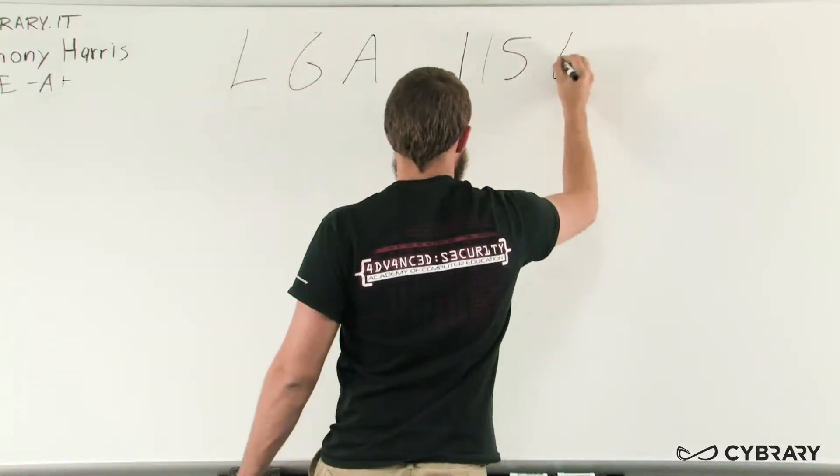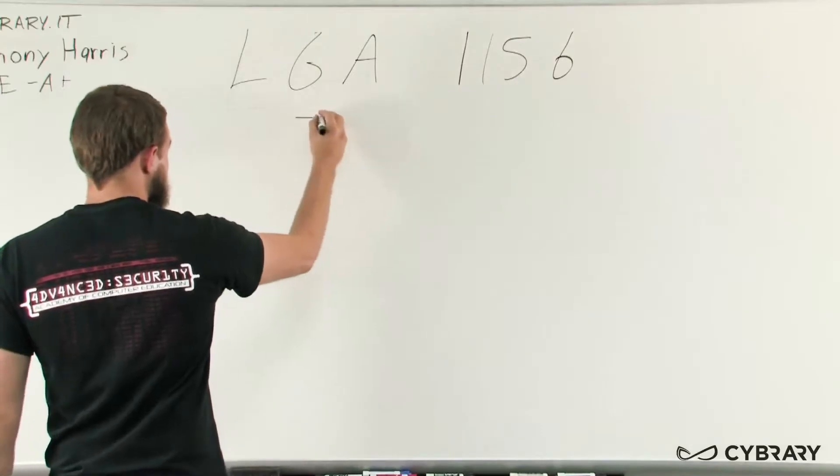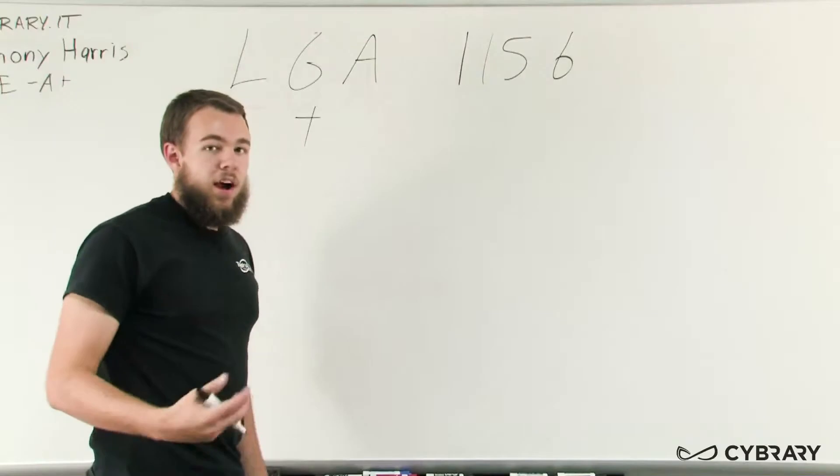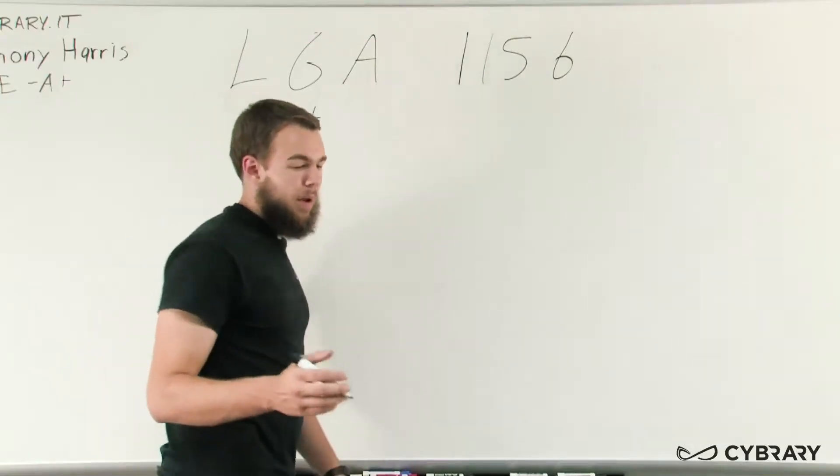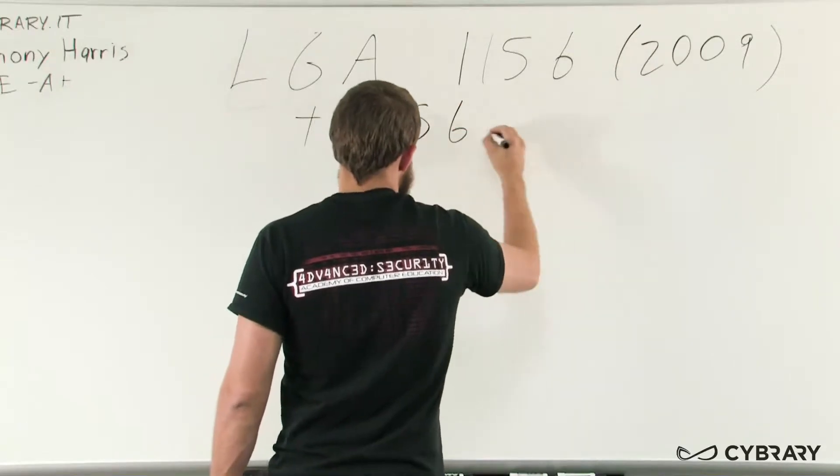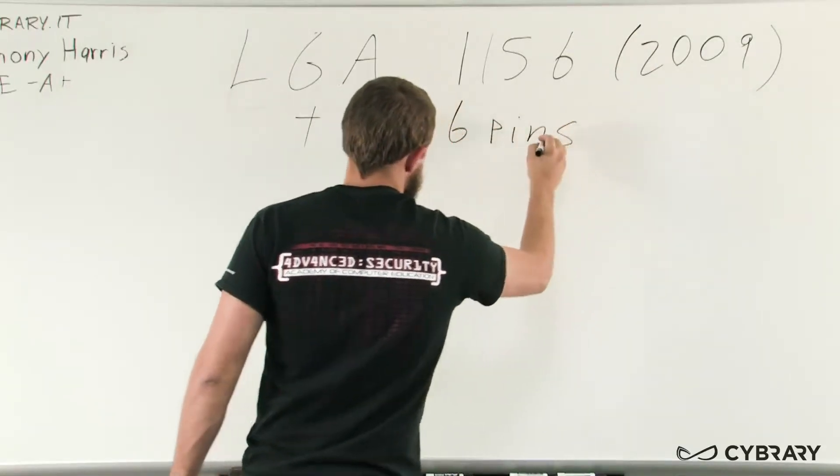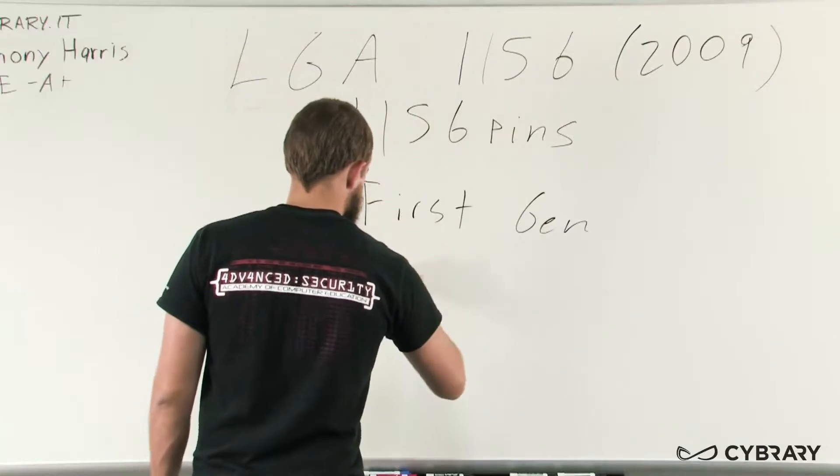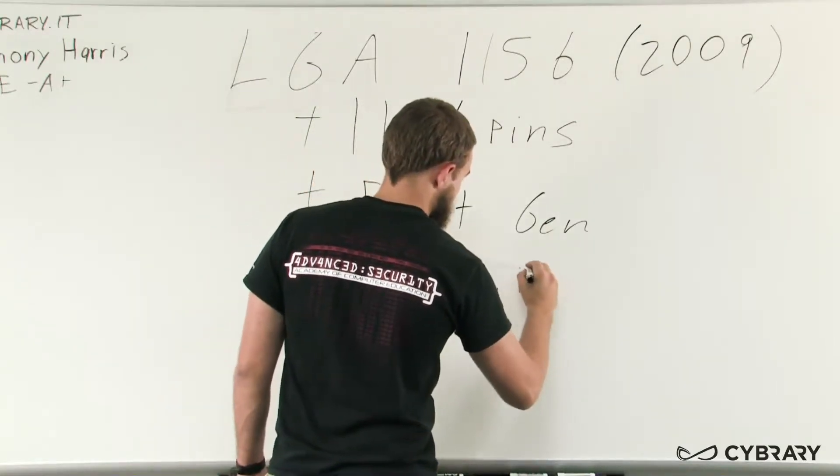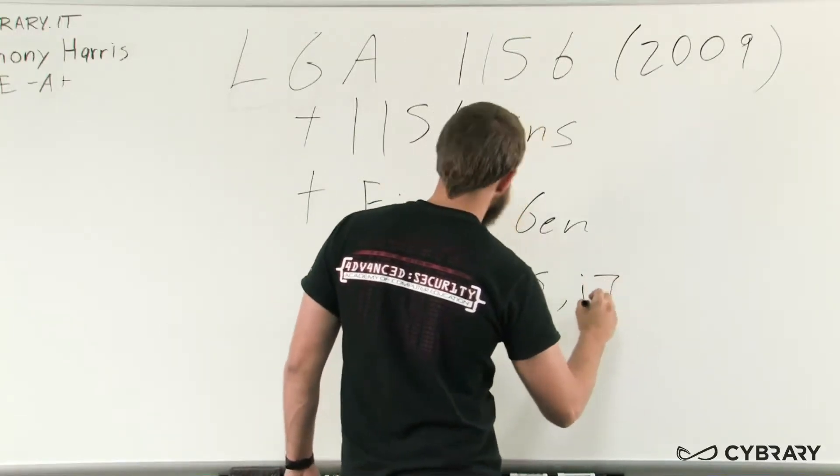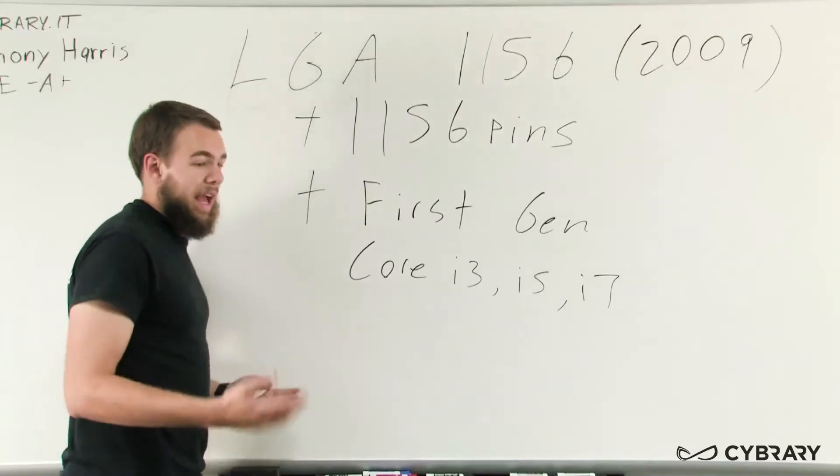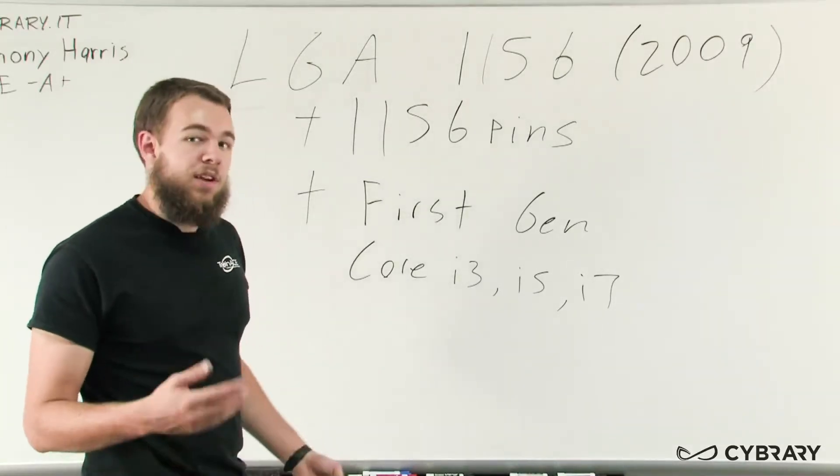Moving on to our next socket we have our LGA-1156 with 1156 pins. This socket was released in about 2009 and again is a LAN grid array so the pins are on the motherboard. We have 1156 pins and when we're talking about what type of processors use this socket we're talking about some of the first gen Core i3s, i5s and some i7s. So this one is a bit after our LGA-1366.